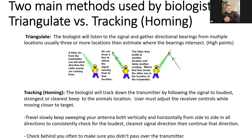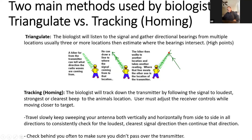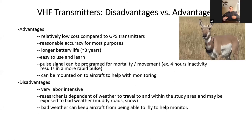The second method is tracking or homing in, used when you need to get close and get a visual. You listen to the receiver, determine the loudest, clearest, strongest beep, and start moving in that direction. As you get closer, you must constantly turn down the volume and gain to lessen the signal and keep isolating its direction. It's also important to periodically check behind you — a transmitter that has fallen off an animal or is covered could be passed without you realizing.